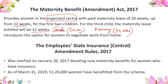The act also secures 12 weeks of maternity leave for mothers adopting a child below the age of three months, as well as for commissioning or biological mothers who opt for surrogacy. This 12-week period is calculated from the date the child is handed over to the adoptive or commissioning mother. The law also mandates that every establishment with over 50 employees must provide crèche facilities within easy distance, which the mother can visit up to four times a day. This provision came into effect from July 1, 2017.